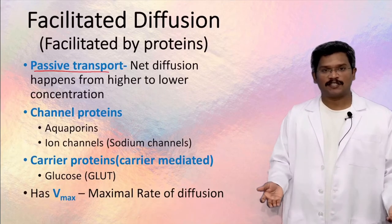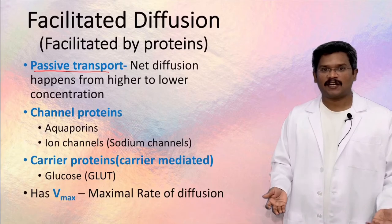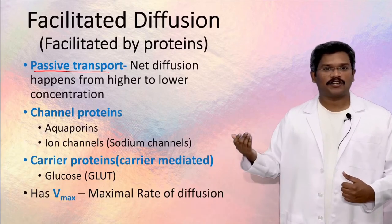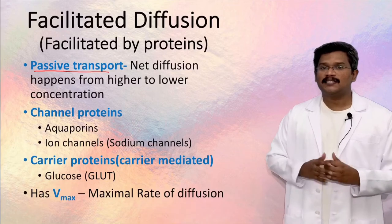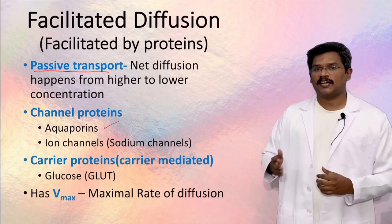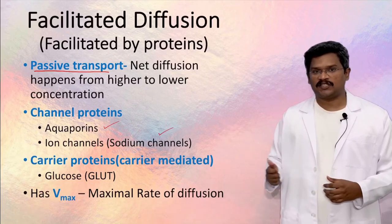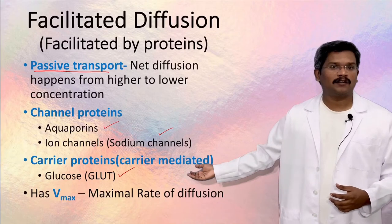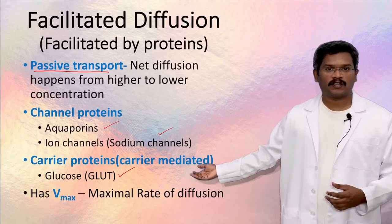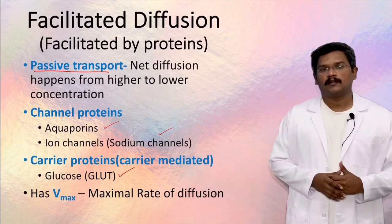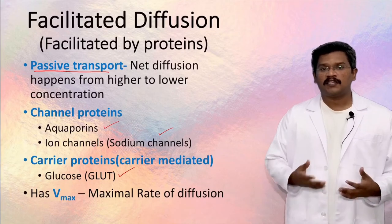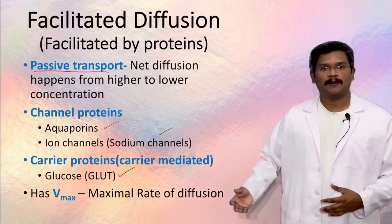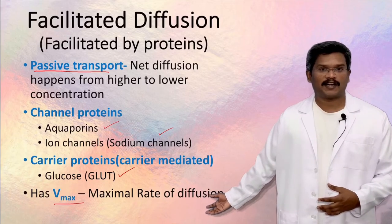Facilitated diffusion is still a passive transport because it doesn't use energy, and the movement happens only from higher concentration to lower concentration. Examples of channels are aquaporins and ion channels. Examples of carrier proteins include the glucose transporter, abbreviated as GLUT.